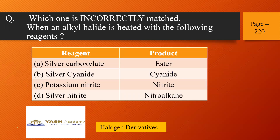Next, from halogen derivatives, page 220 — which one is incorrectly matched? When an alkyl halide RX is heated with various reagents: silver carboxylate gives an ester; silver cyanide gives cyanides; potassium nitrite gives nitrite; and silver nitrite gives nitroalkane. Silver cyanide (AgCN) has a covalent Ag-C bond, so the linkage is obtained through nitrogen, not carbon — meaning isocyanides or isonitriles are formed, not cyanides. So this pair is not correctly matched.